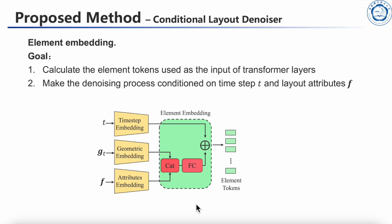The element embedding module calculates the element tokens used as the input of transformer layers. We use a simple conditioning mechanism by first concatenating the layout geometric parameters and layout attributes, and then performing element-wise addition with the time step embedding. This way, the denoising process is conditioned on both time step T and layout attributes F.